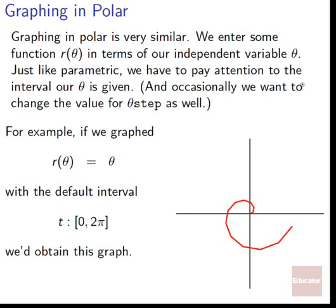Graphing in polar is very similar. We enter some function r(θ) in terms of our new independent variable θ. Just like parametric, we have to pay attention to the interval our θ is given. The interval will normally standardly go to t going from 0 to 2π, but often that's not going to be enough for some of the functions we'll be working with. And occasionally we'll want to deal with the θ-step value as well if we want to smooth it out. It might wind up being jaggy for certain initial θ-step values, so we might want to make it smaller to smooth things out.